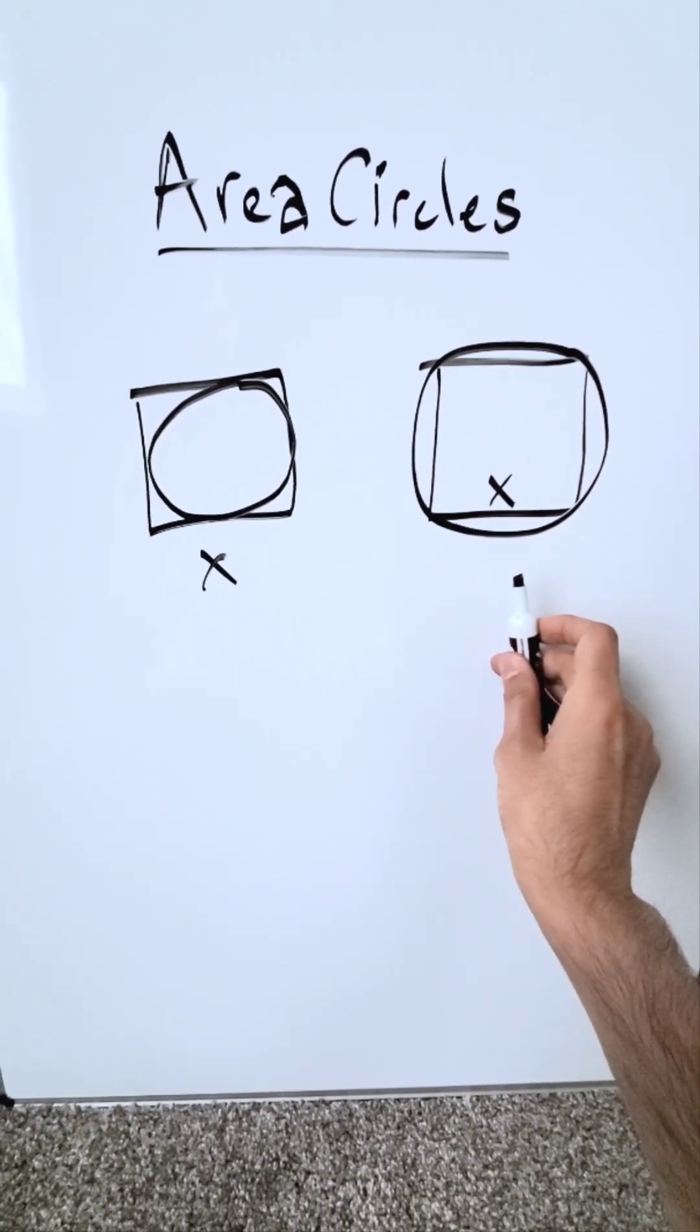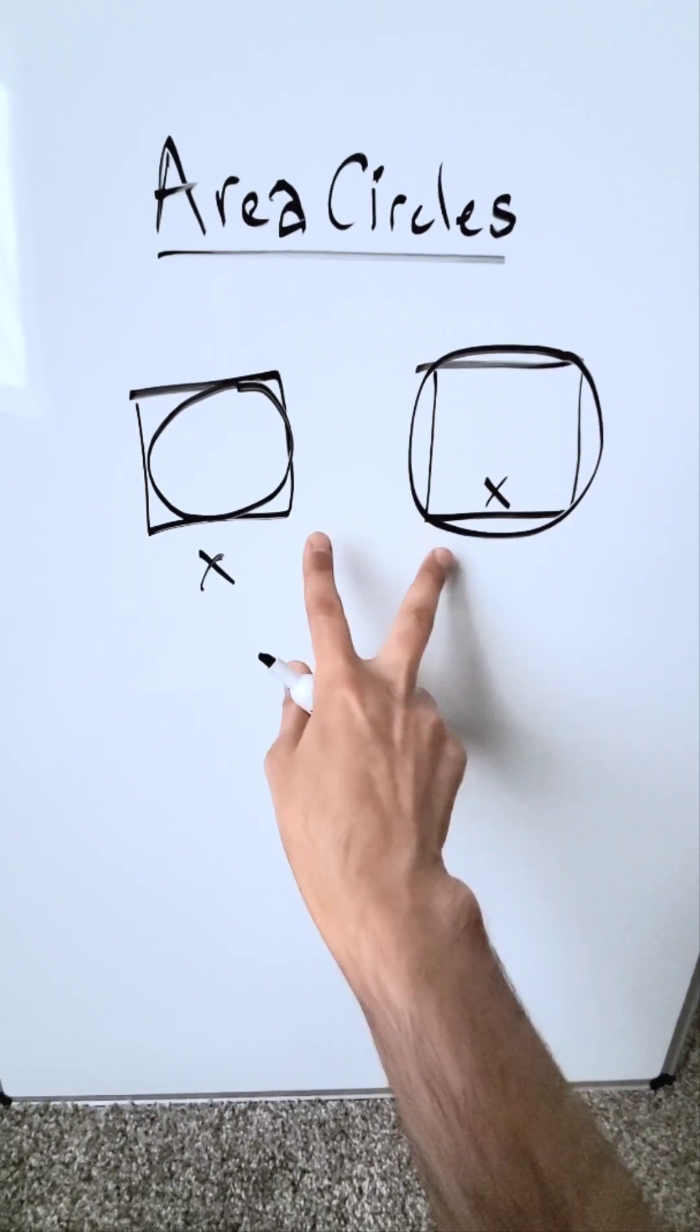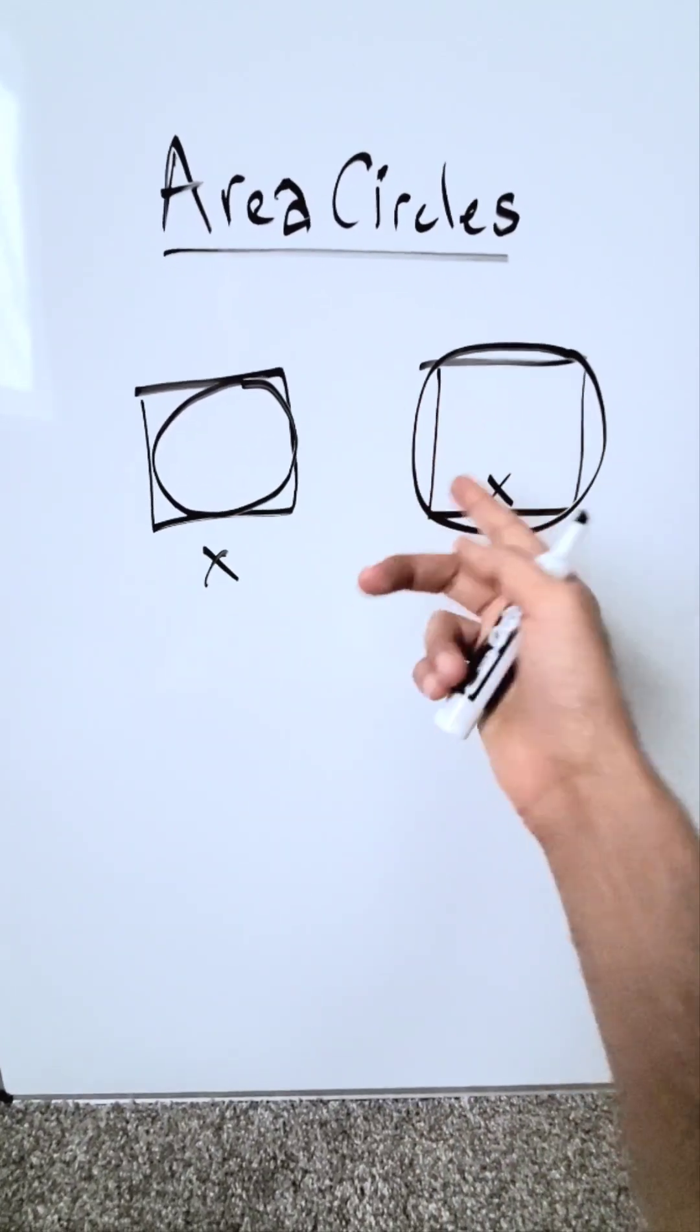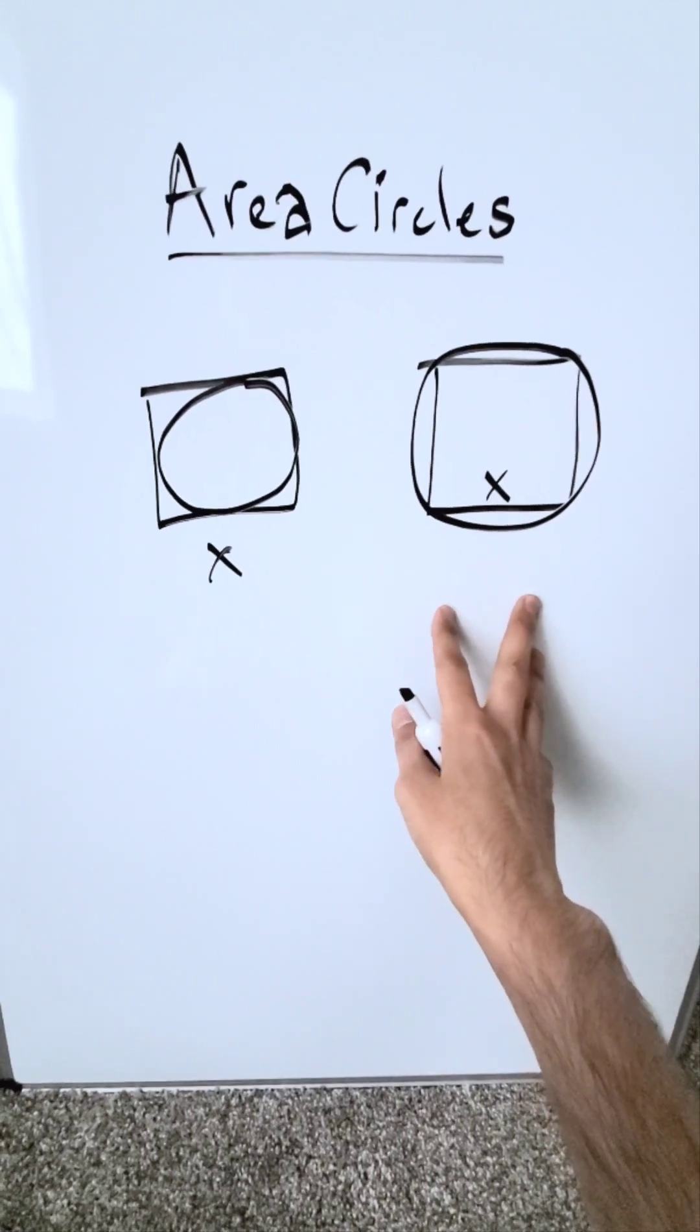I want to compare the areas of both of these circles. Obviously, the squares are the same in both cases. This circle will be smaller than this, but by how many times? That right there is the interesting observation.